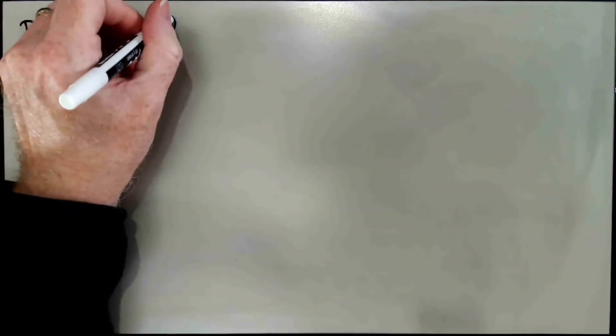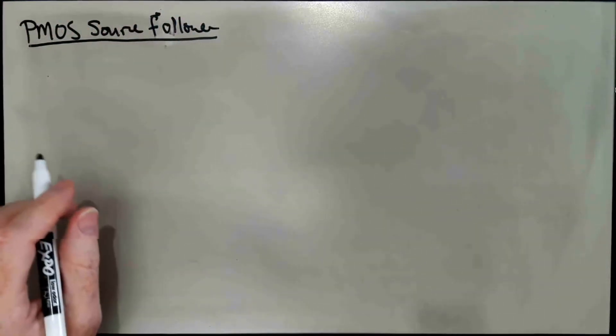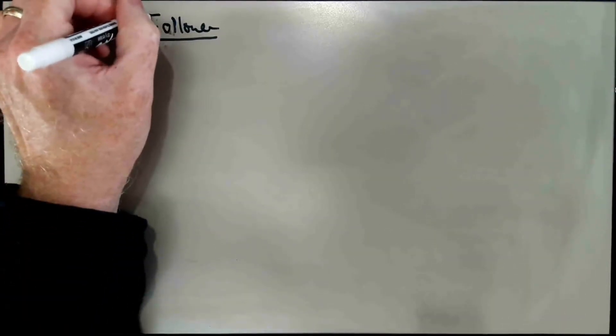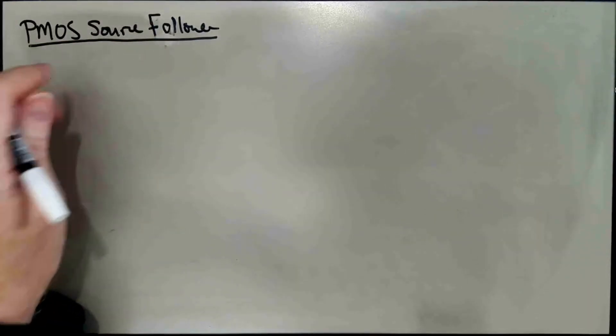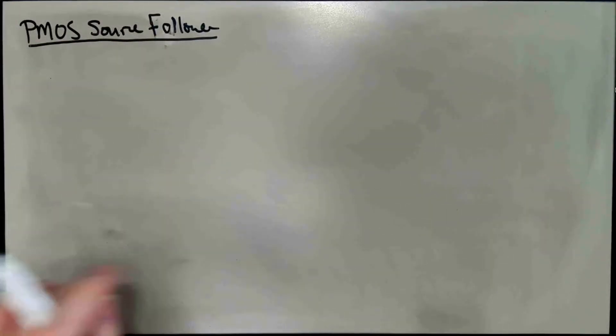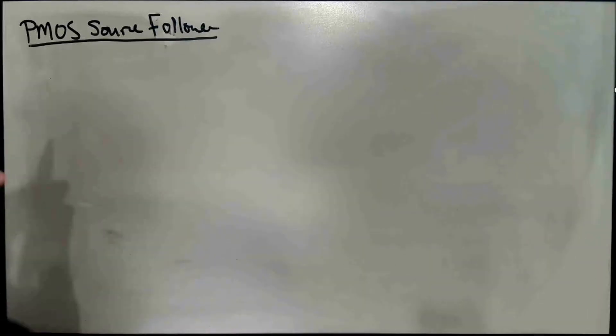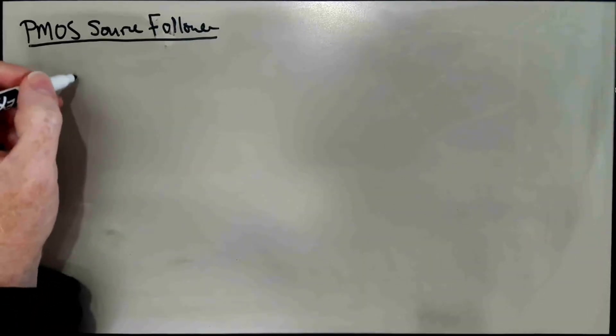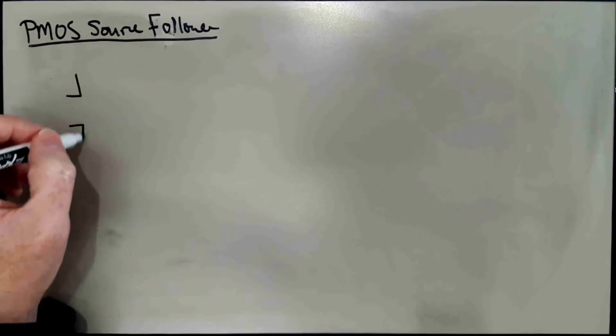In this segment, we're going to be looking at the PMOS source follower, and we're going to do that by mapping our NMOS results into corresponding PMOS results. First of all, the question arises: how do we come up with a PMOS version of the circuit from the NMOS version?